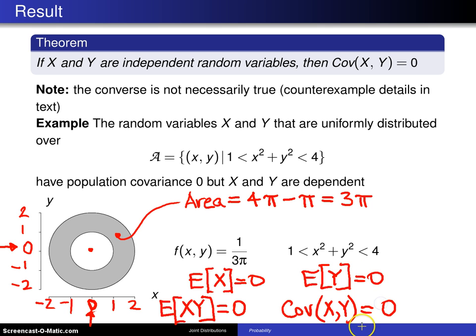So we get a covariance of 0. So here is a distribution with a covariance of 0, but X and Y are not independent. How do you know they're not independent?